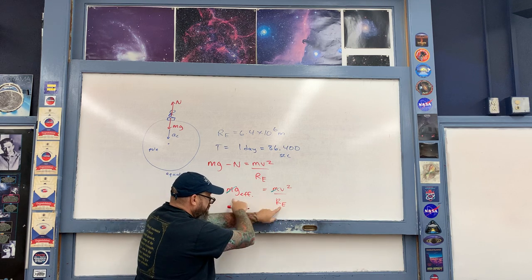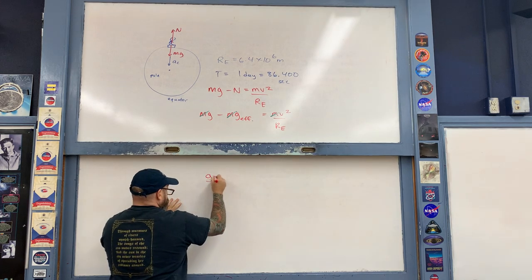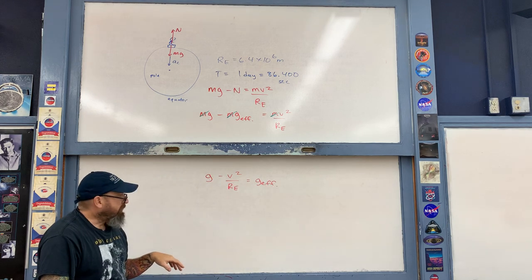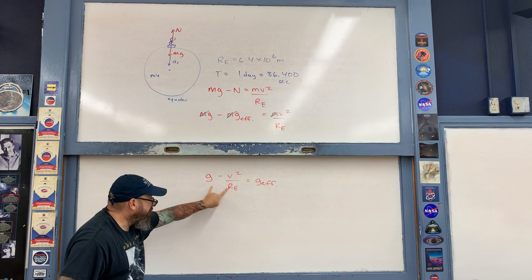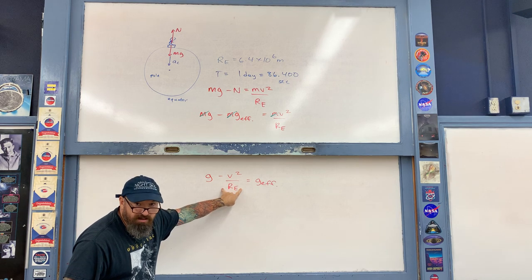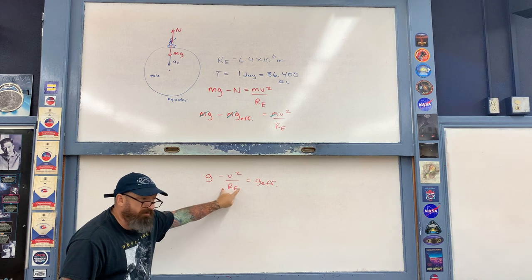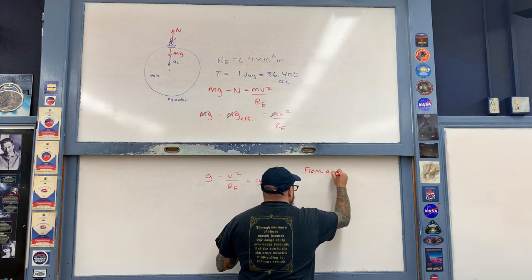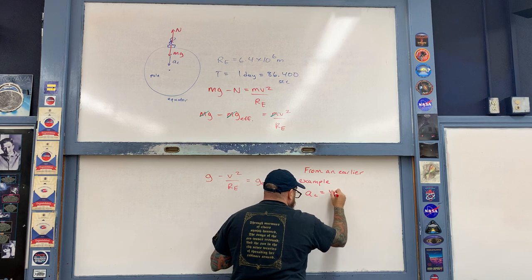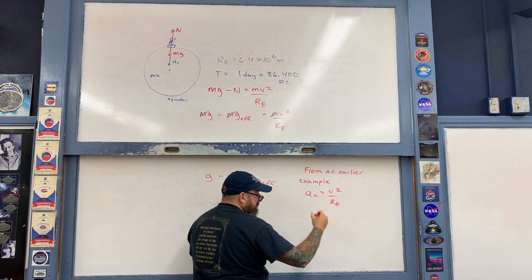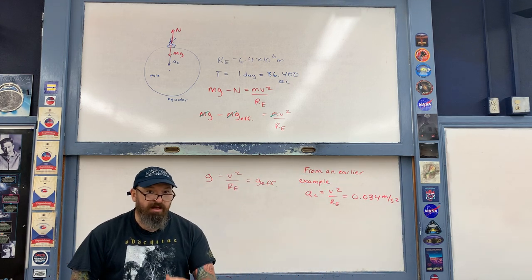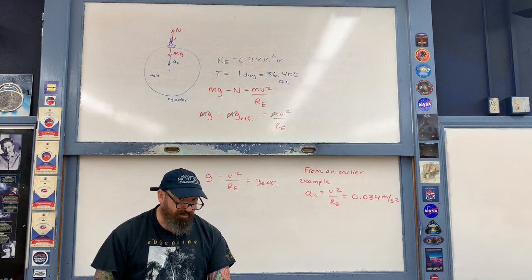In order to find that effective value, we take these two terms and algebraically switch them, giving us the effective value of g. So the effective value of g is less than the actual value by the centripetal acceleration. This centripetal acceleration — v²/r — is what we calculated in an earlier kinematics example at the beginning of this unit on centripetal force. From that earlier example, the centripetal acceleration was a small value: 0.034 m/s². I noted how small that is compared to 9.8 m/s².